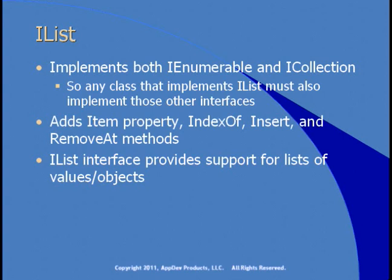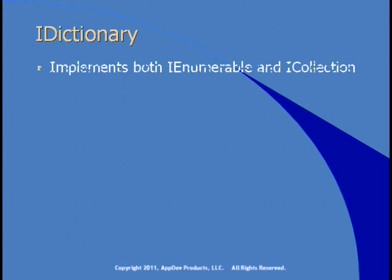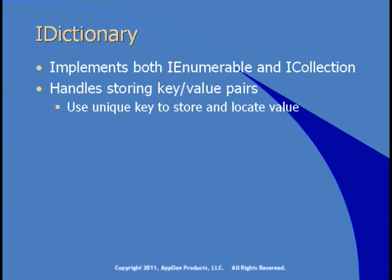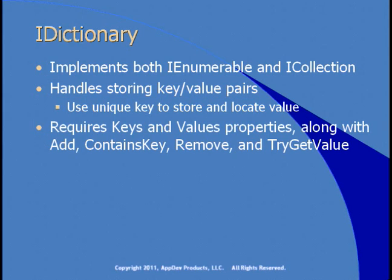There's one more we need to care about: IDictionary. This implements both IEnumerable and ICollection but adds support for storing key-value pairs, using a unique key to store and locate a value. This is the kind of collection you'd need to find a customer by their unique key without looking through every item in the collection. A dictionary requires keys and values properties, along with add, containsKey, remove, and tryGetValue methods — where tryGetValue returns false instead of raising an exception if the key isn't found.